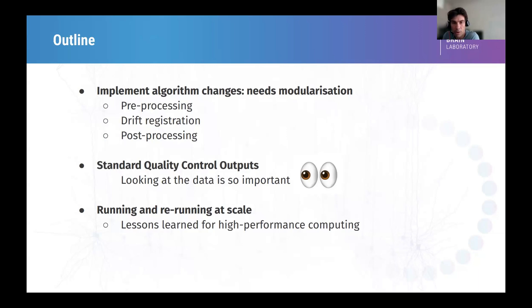The second thing is that for us, it was really important when operating at scale to have some more quality outputs, quality control outputs, and especially intermediate quality control outputs. Some figures of the drift registration, some figures of the preprocessing, instead of operating as a black box, that we have something that we can look at if things go wrong, because they will go wrong if you have many recordings. The last thing is that it's more about rerunning at scale. This may not be relevant for here, but that's one of the reasons why we wanted to change a bit the sorter.